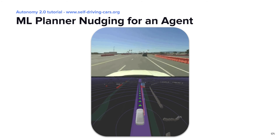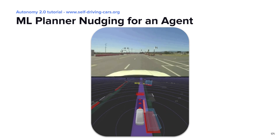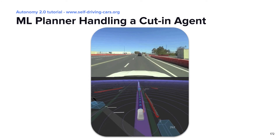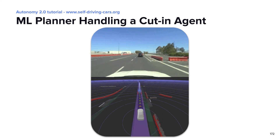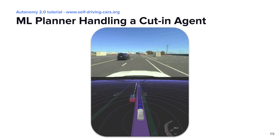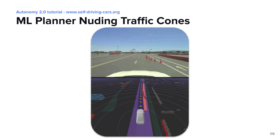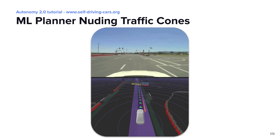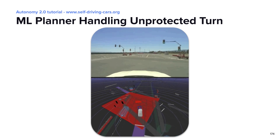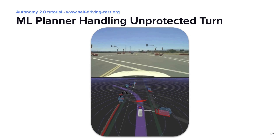Next, we present a few more cases showing the ML planner running in real tests. The first one shows that the nice nudge behavior also generalizes to the real world. Another test shows that the model is able to properly slow down for decelerating cutting agents and maintain a safe distance. Moreover, the ML planner is also able to gracefully handle static objects such as traffic cones. Lastly, this test shows that the ML planner can properly wait for oncoming traffic in an unprotected turn before making the turn in real road tests.